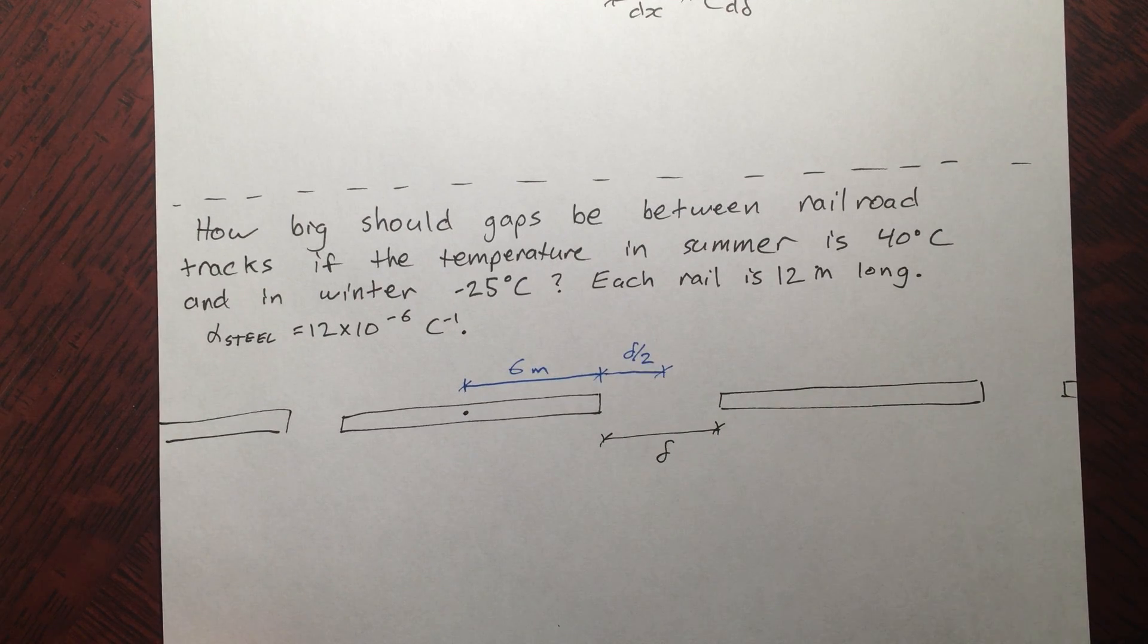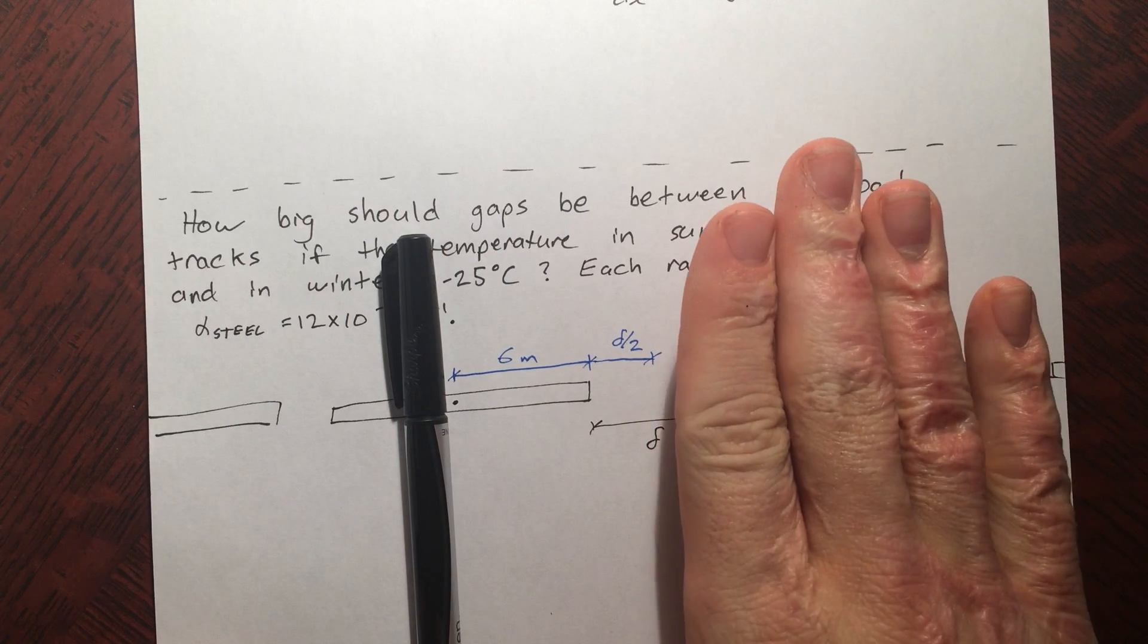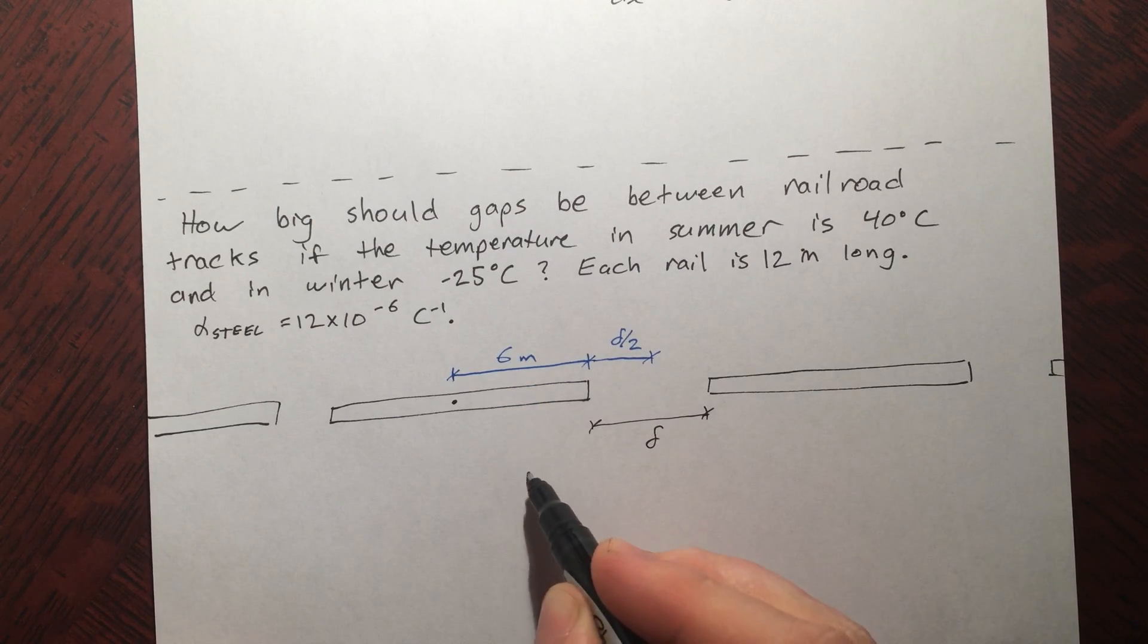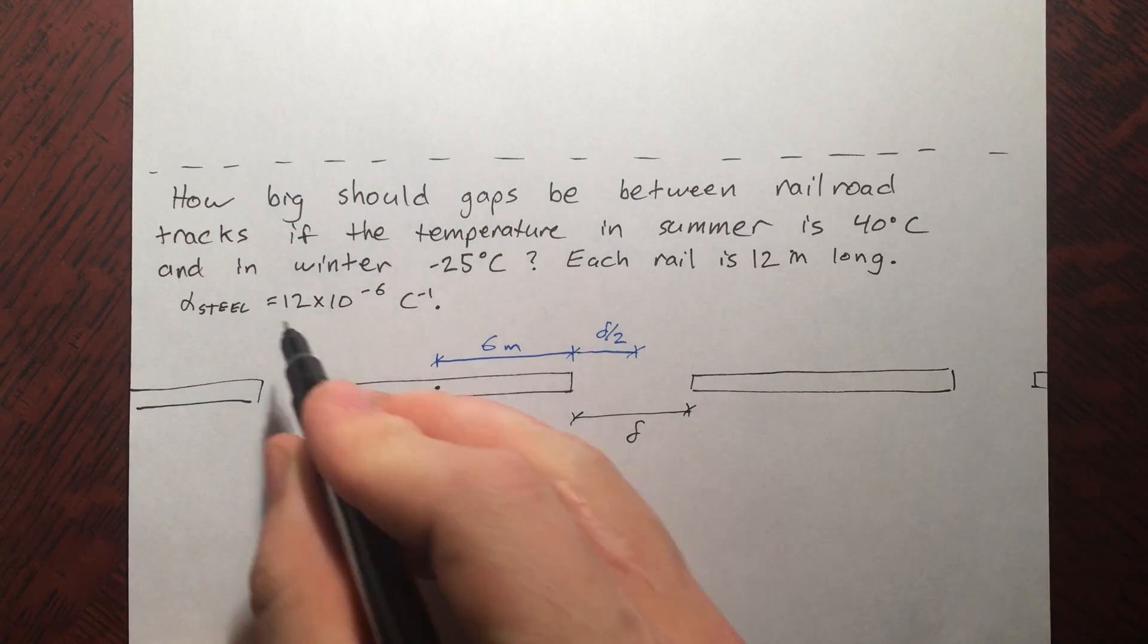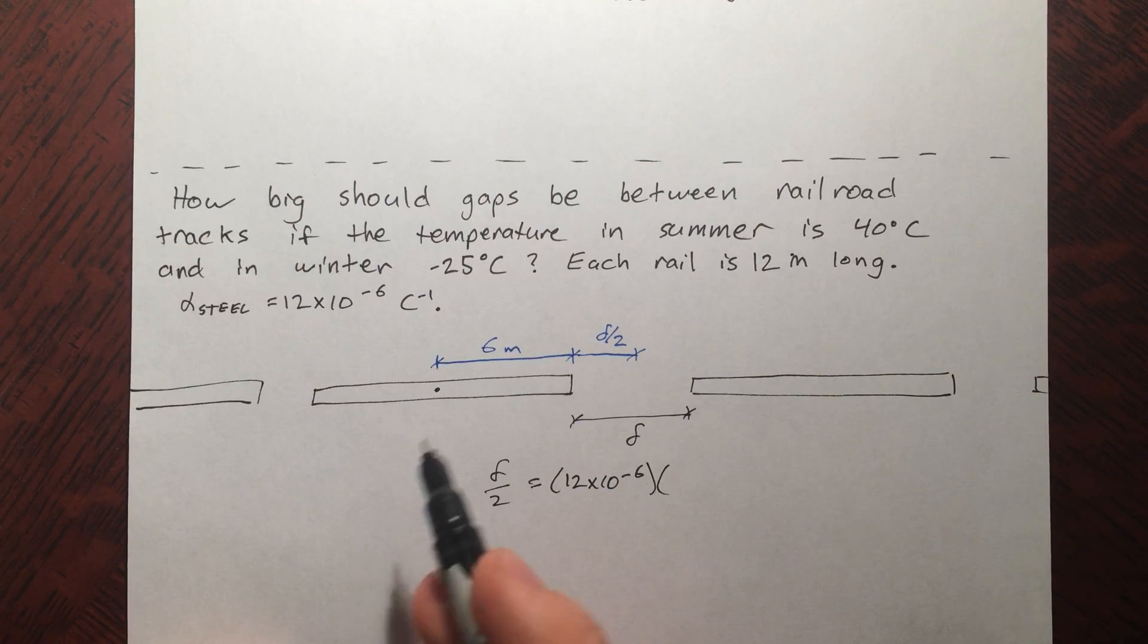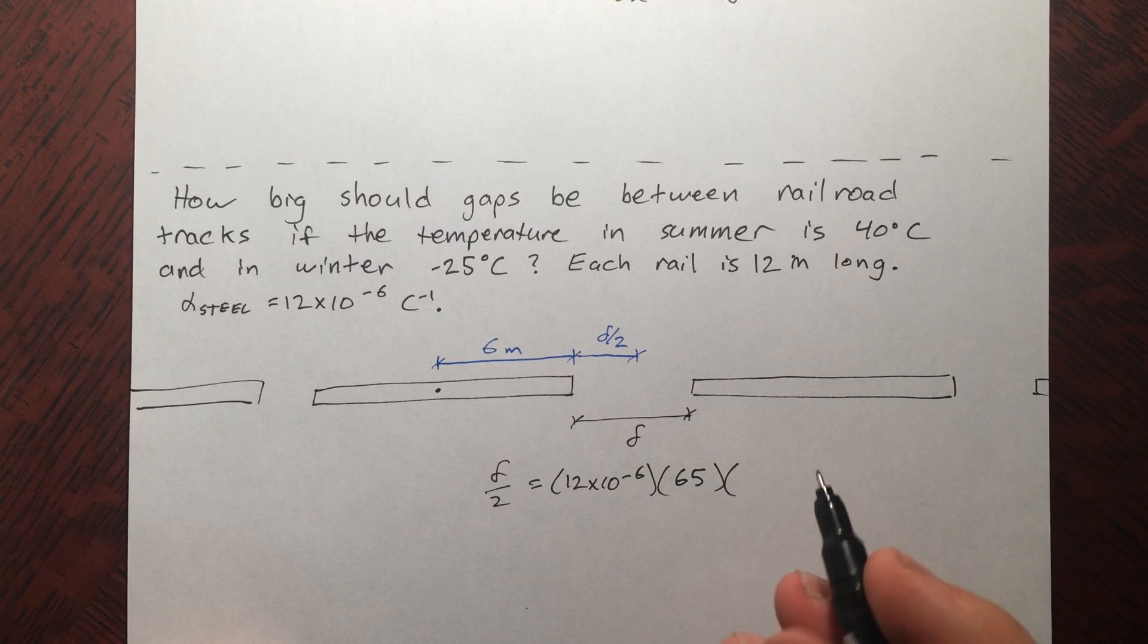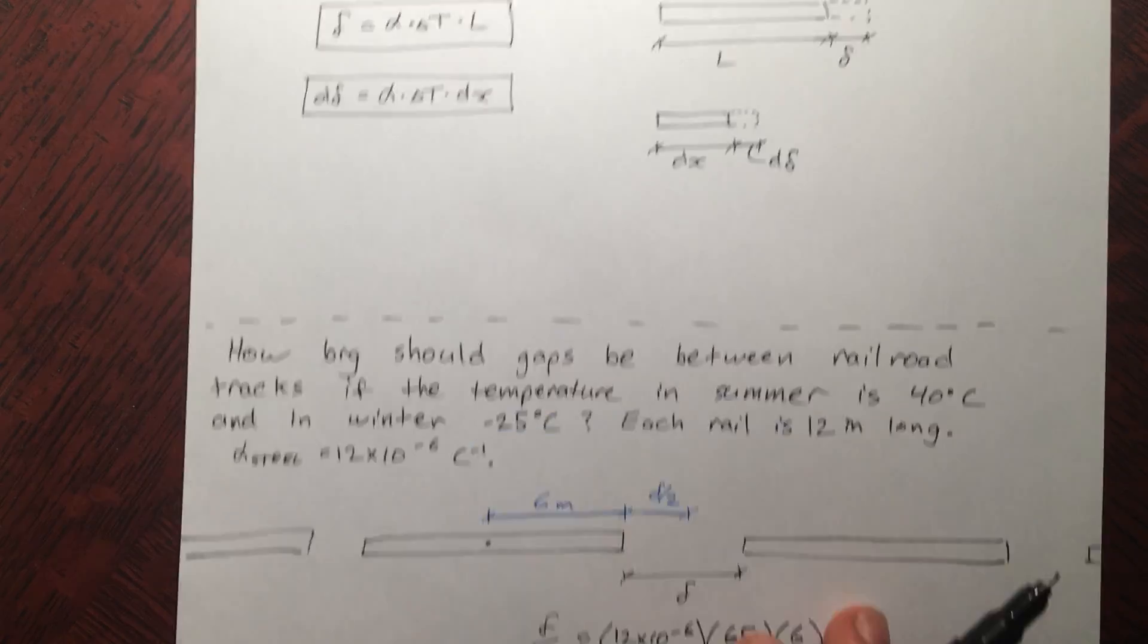So we can write this bit of displacement as just pretending this little piece here, this bar 6 meters long, that's elongating delta by 2. What does delta have to be with this change in temperature? So delta by 2 equals alpha delta T times L. Alpha, we got 12 times 10 to the minus 6. Delta T, that's 40 minus negative 25, that's 65 degrees. And then the length of this piece, that's 6 meters.